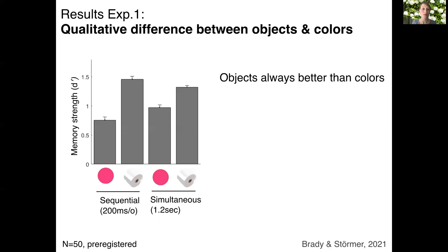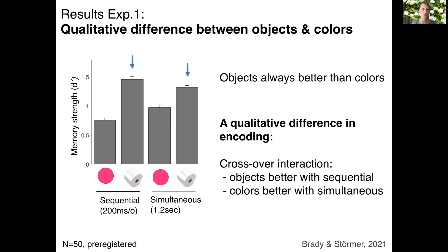In our first experiment, what we find is that real-world objects are always remembered better than colors, regardless of encoding condition, replicating our previous work. But most interestingly, we find a qualitative difference between stimuli and encoding. The real-world object benefit is larger when items are shown sequentially relative to all at once, so individual one item at a time encoding helps memory for real-world objects.